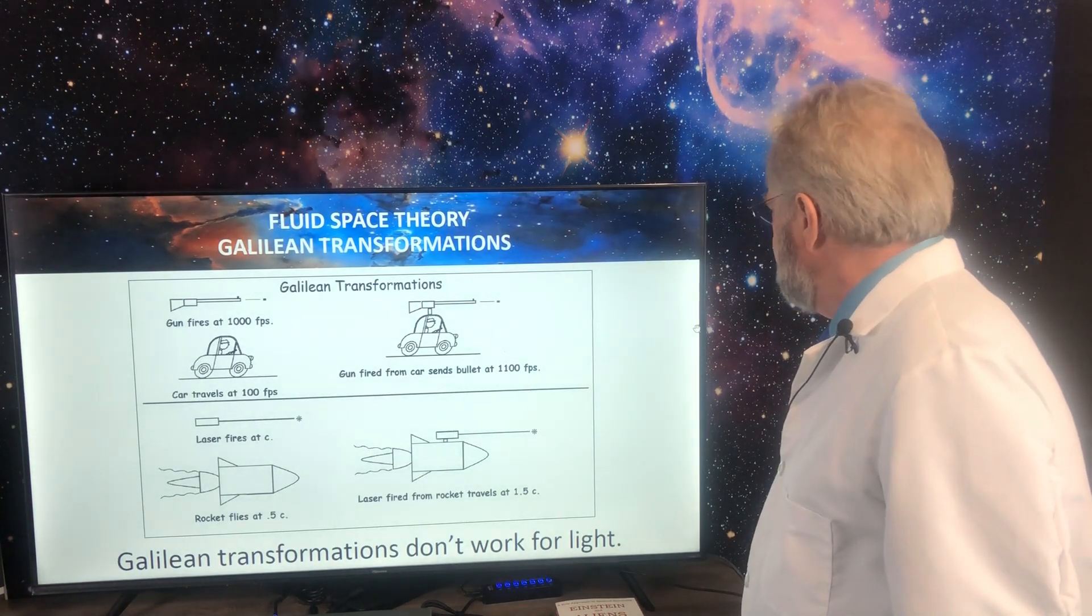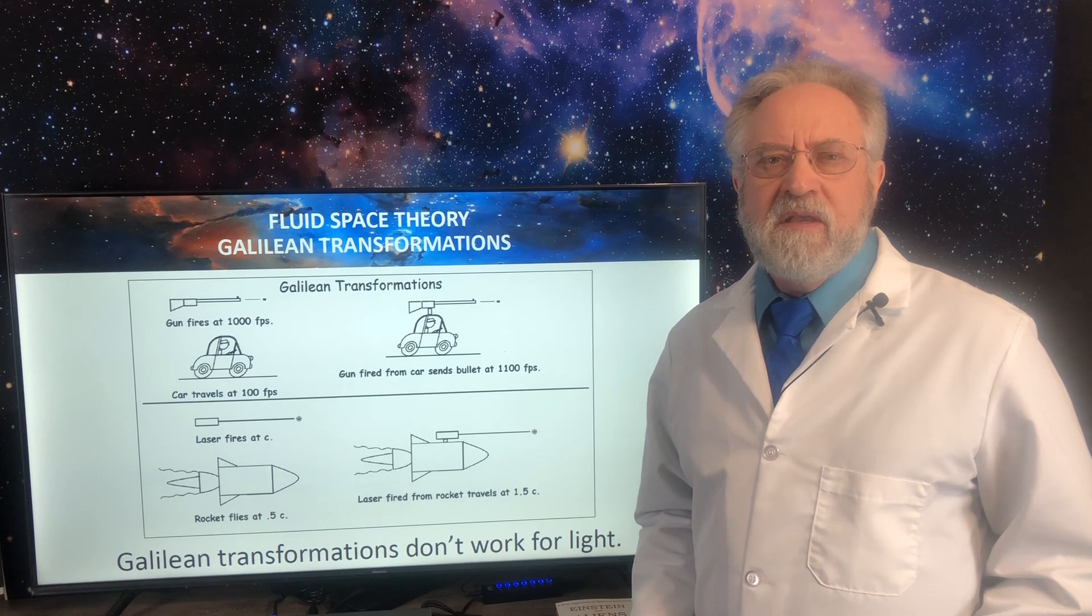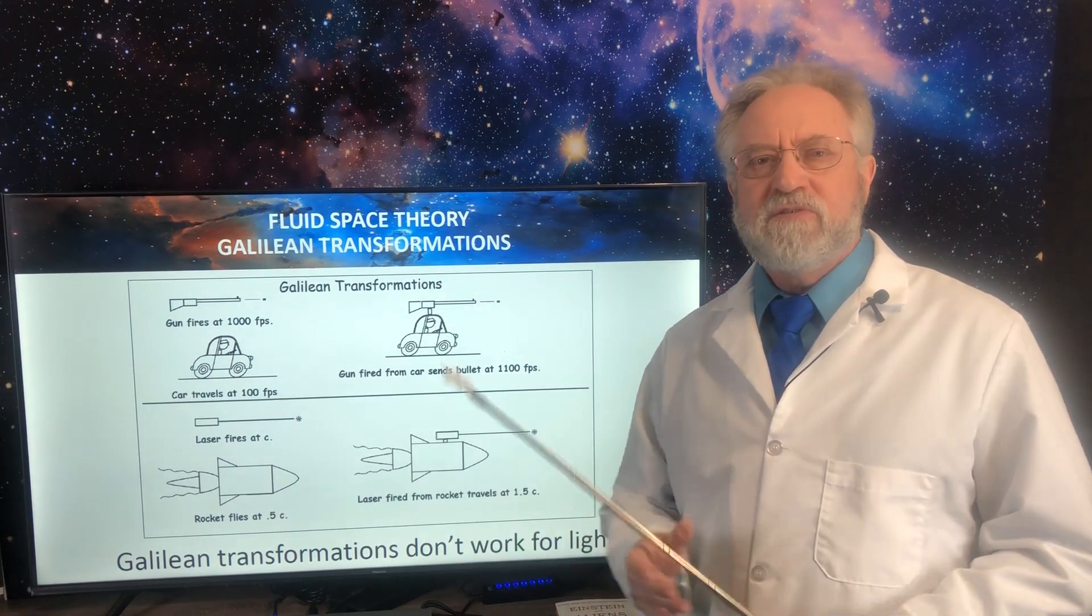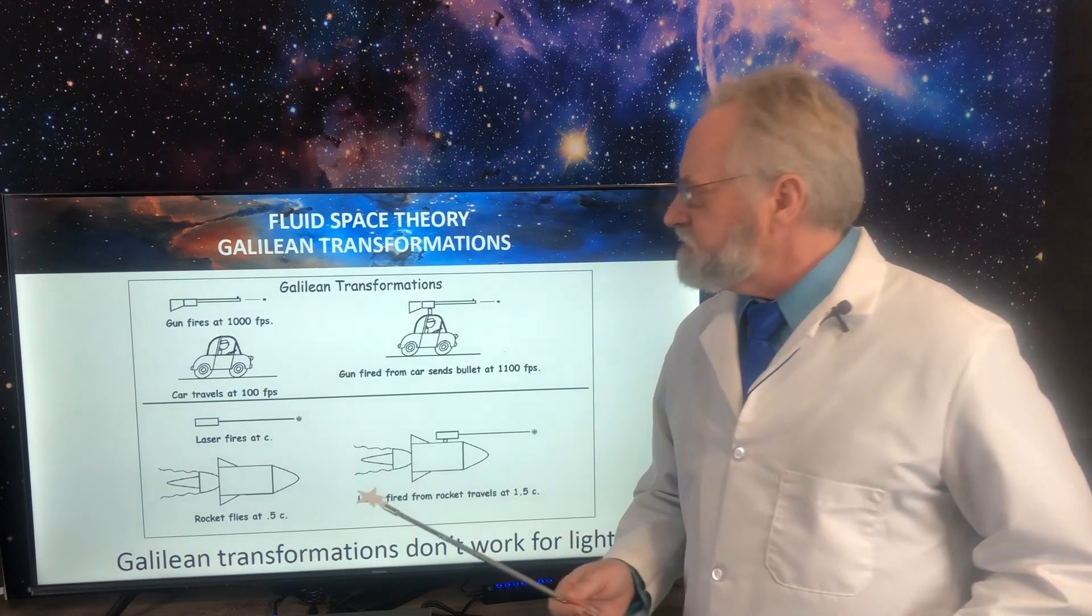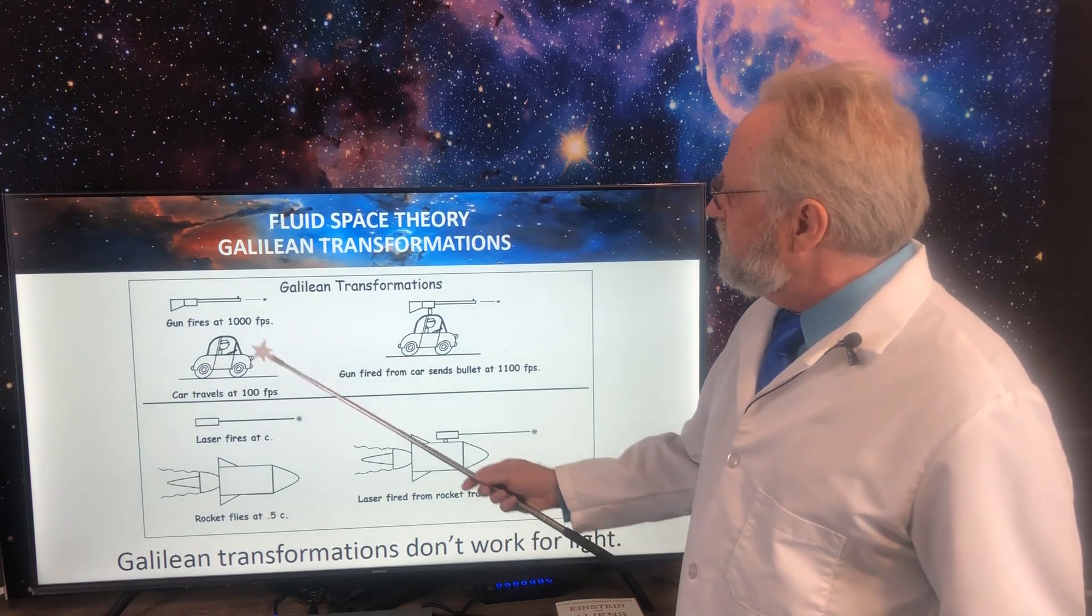Well, at the time there were some perplexing experiments that had been run, the Michelson-Morley experiments, and they tried to find the motion of the earth through space by measuring the speed of light. So here's basically how the experiment would work.